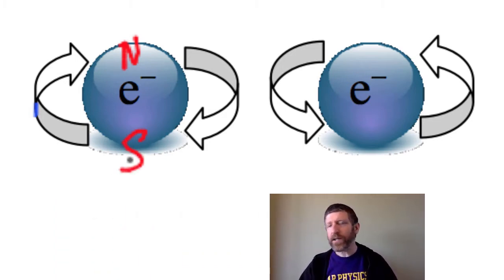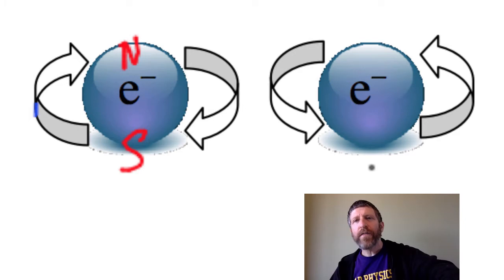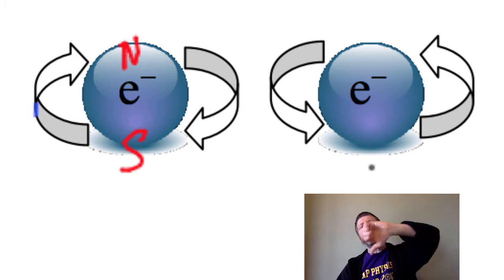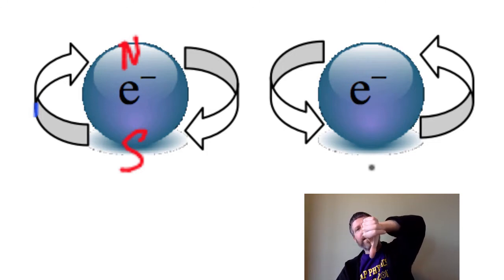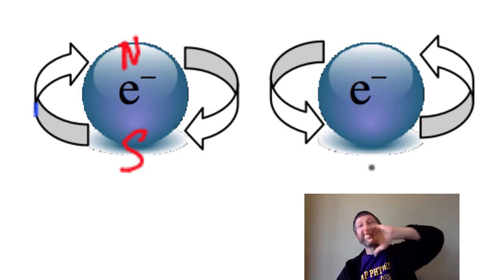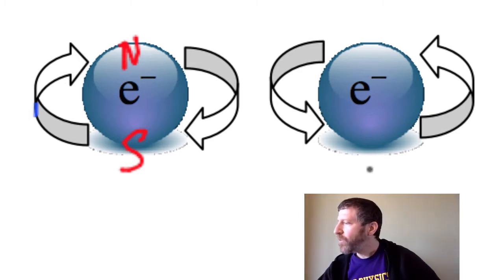The other electron on the right is spinning the other way — on your left it's going out of the page and on the right it's going into the page. Using the left-hand rule again, because it's a negative charge spinning around, that gives us the north pole down and the south pole up.